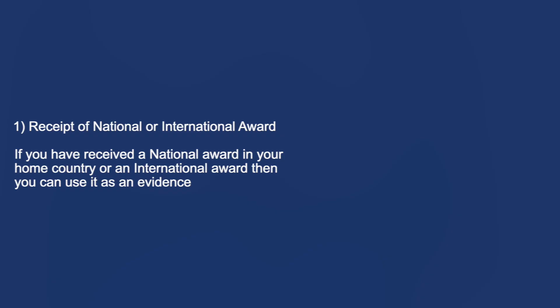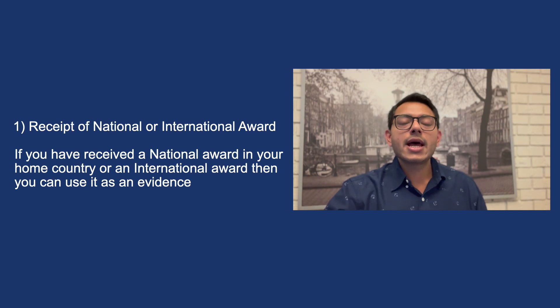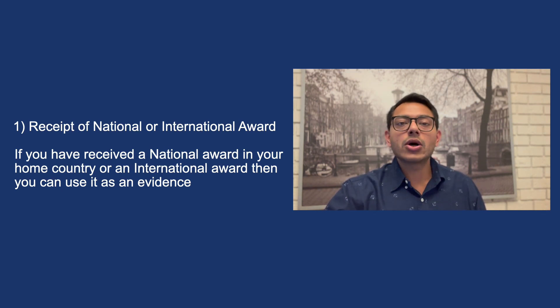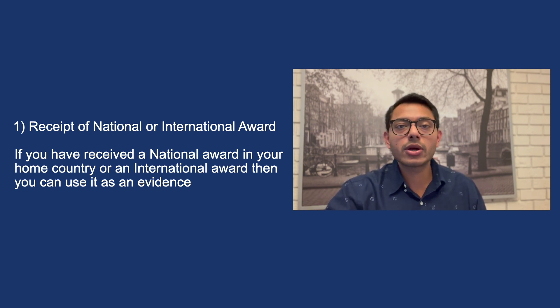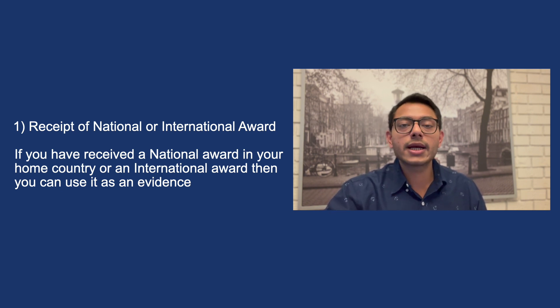Let's start with the criteria set for EB1A and EB1B. There are 10 criteria that USCIS has set for an individual to fulfill for qualifying in EB1A and EB1B. The very first criteria is evidence of receipt of a national or international award. This can be any national award that you have received in your home country or an international award that you have won for some of your work, and you can use those awards as evidence to fulfill this criteria.